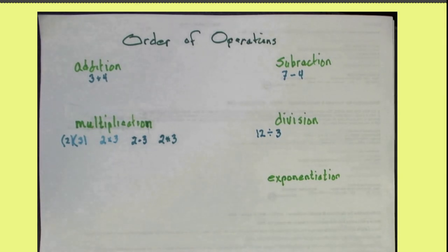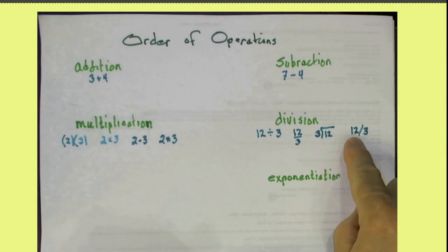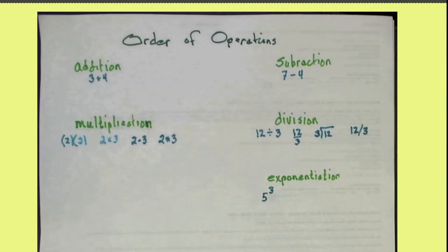There's been a lot of notation for division as well. Sometimes this bar with two little dots, so 12 divided by 3 this way, or 3 divides into 12. The notation most commonly used in technology is 12 slash 3.